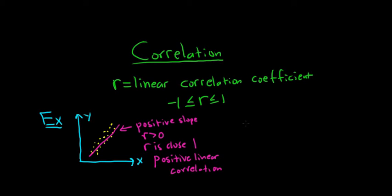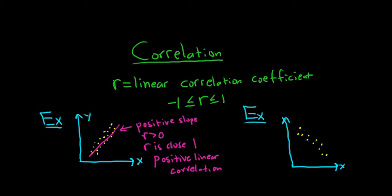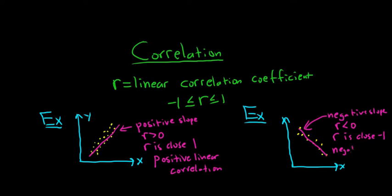Let's look at another example. Say we have the y-axis and the x-axis, and again we have some dots. We have our line that comes as close as possible to as many points as possible. This line now has a negative slope, so in this case R is less than 0. Because the dots are really close to the line, R is probably close to negative 1. The closer it is to negative 1, the better the pattern. In this case we have what's called negative linear correlation.